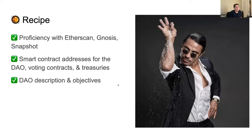To be a good DAO roaster, especially in the Ethereum ecosystem, it's important to be proficient with navigating Etherscan, reading contract code, decoding event logs, navigating the Gnosis Safe UI beyond just transactions — including the settings and modules that a DAO might have enabled on their treasuries. You also need to understand how to navigate Snapshot settings and use their API.